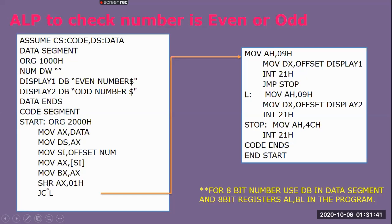Then we perform one shift-right operation. Once we do one SHR operation by one bit, the LSB will be stored in the carry flag. Now we check the carry flag. If there is no carry, it represents an even number.